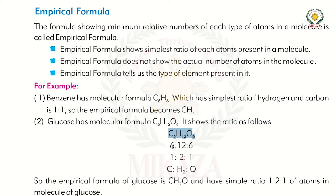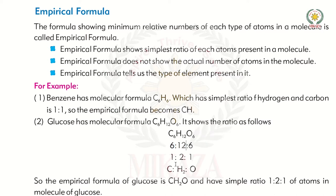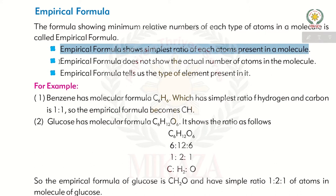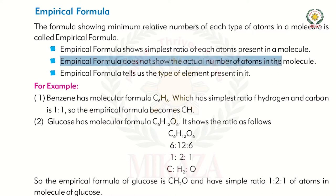C6H12O6 — when we simplify the ratio, the empirical formula is CH2O. That is known as the empirical formula. The empirical formula shows the simplest ratio of each atom present in a molecule. It does not show the actual number of atoms in a molecule.